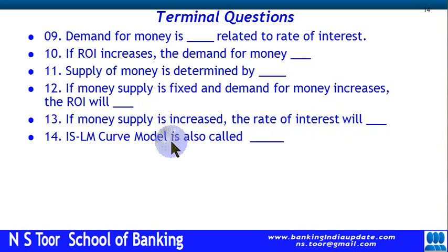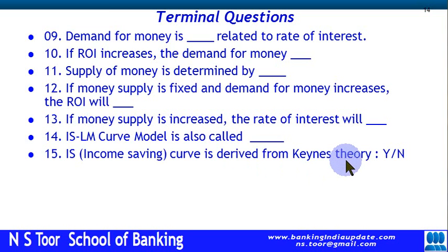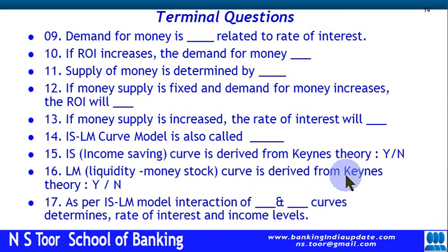The IS-LM curve model is also called Hicks-Hansen synthesis. The IS income-saving curve is derived from classical theory — not Keynes' theory. The LM liquidity money stock curve is derived from Keynes' theory. As per the IS-LM model, the interaction of the curves determines the rate of interest and income level.